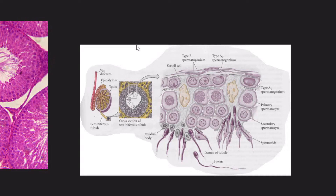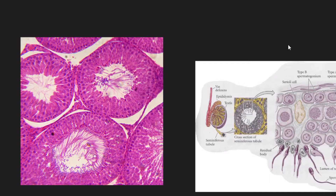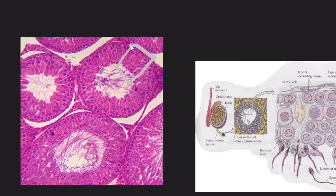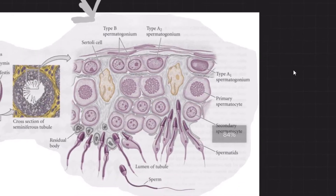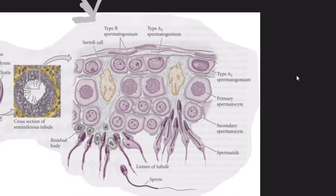When we take a transverse section of the testis, essentially we are taking a look inside the seminiferous tubules. This picture shows a transverse section of the testis, and when we zoom in to a particular portion, we get to see what is really inside the seminiferous tubules.